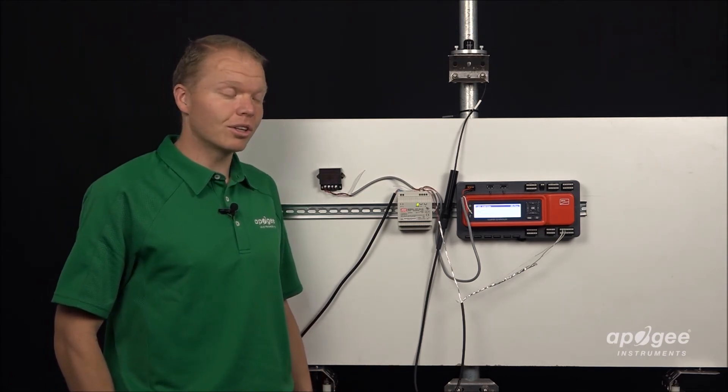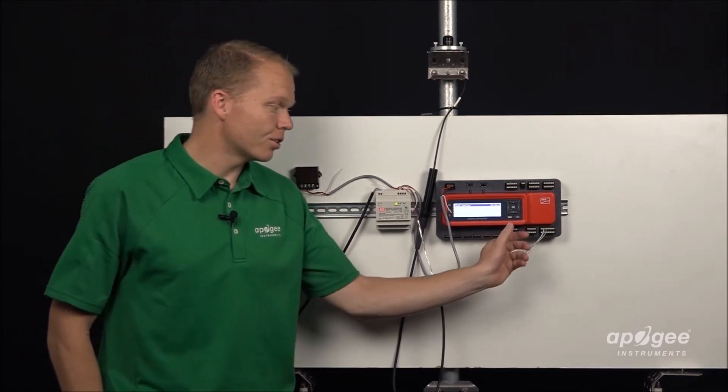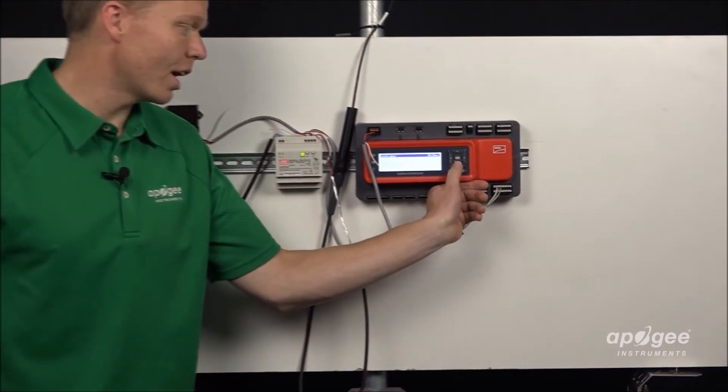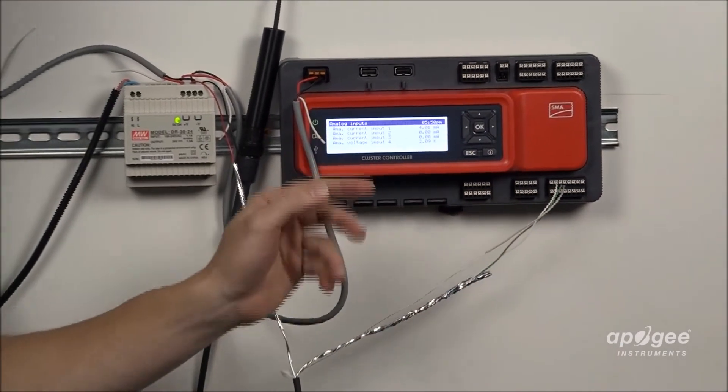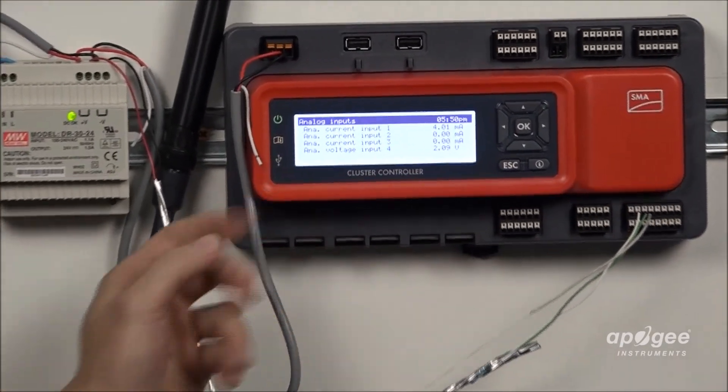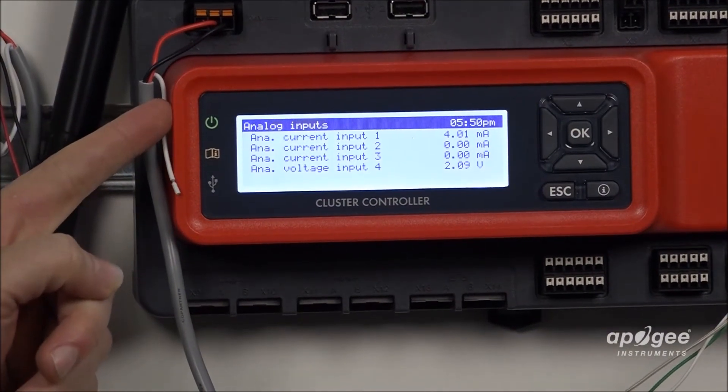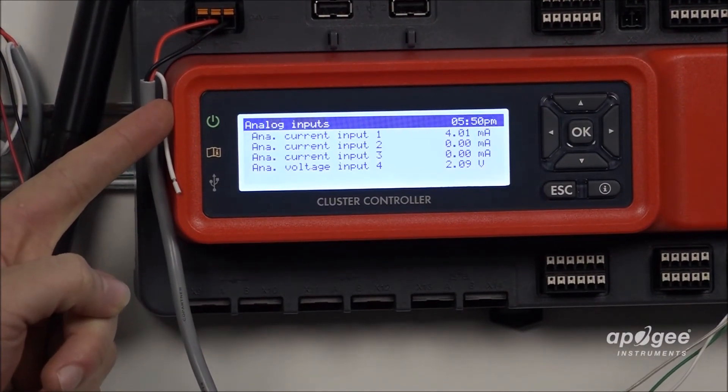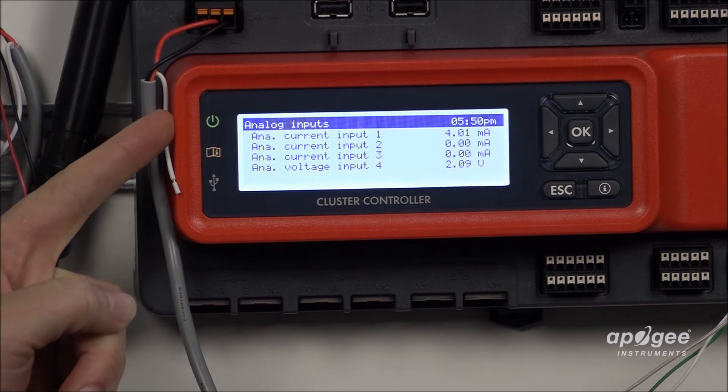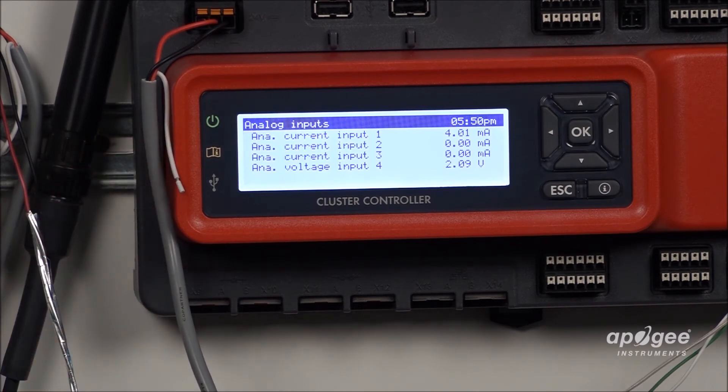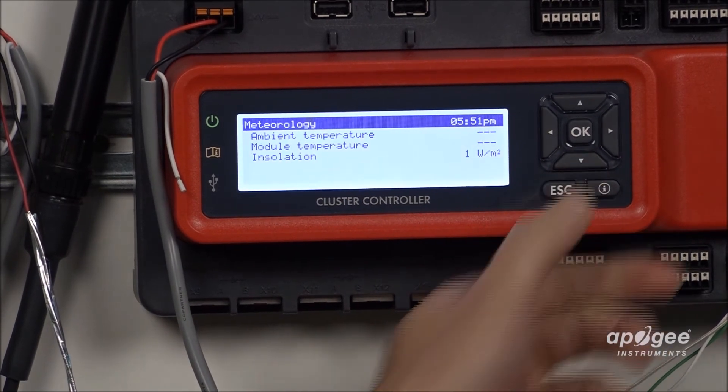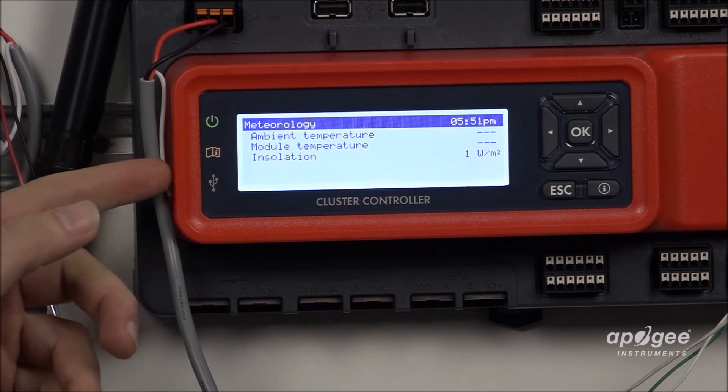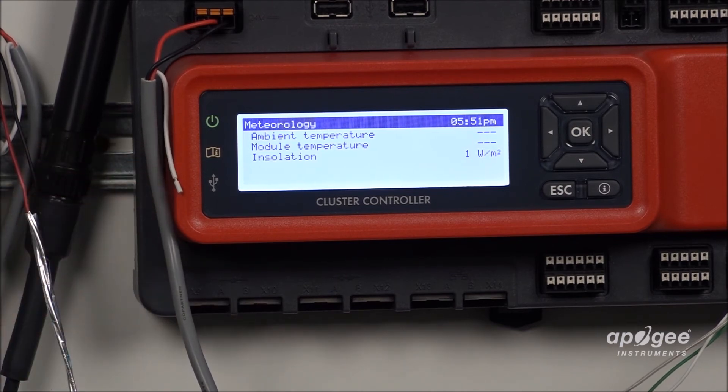The other way that you can look at this is on the controller itself. If you scroll down a number of times you get to analog inputs. Analog current input number one on the top there is showing us the data reading from the sensor and in our example here it's reading 4.01 milliamp which is correct for our studio. There is very little light and if we hit down two more times we can see the installation converting that to 1 watts per meter square.